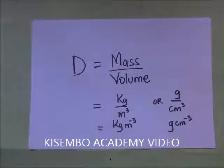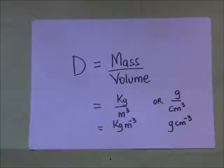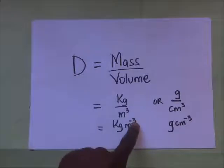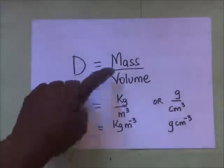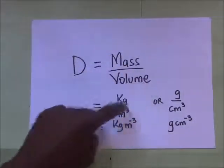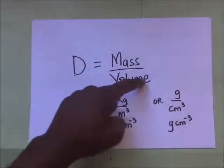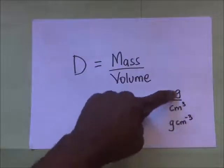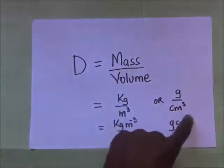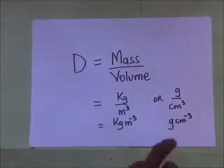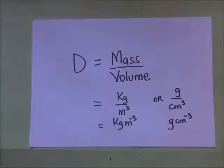So that basically is density: the mass per unit volume of a substance. Its SI unit is kilograms per meter cubed, which comes from mass in kilograms divided by volume in meters cubed. Or it can be grams divided by centimeters cubed. One of those two is the SI unit of density.